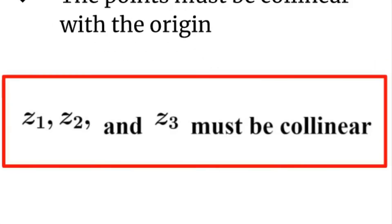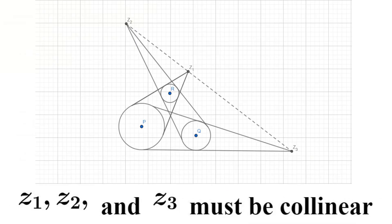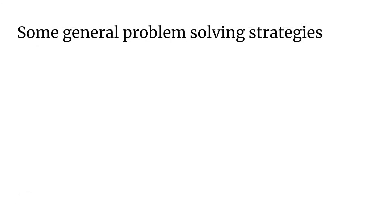So Z1, Z2, and Z3 must be collinear. And there we have our proof. The outside points where the three pairs of tangents meet all lie on the same line.